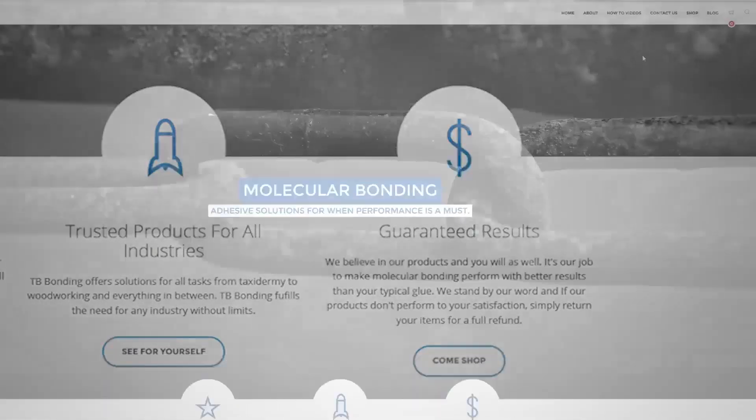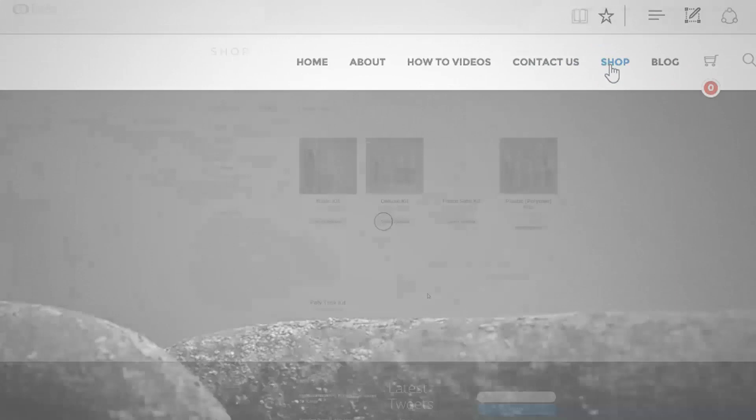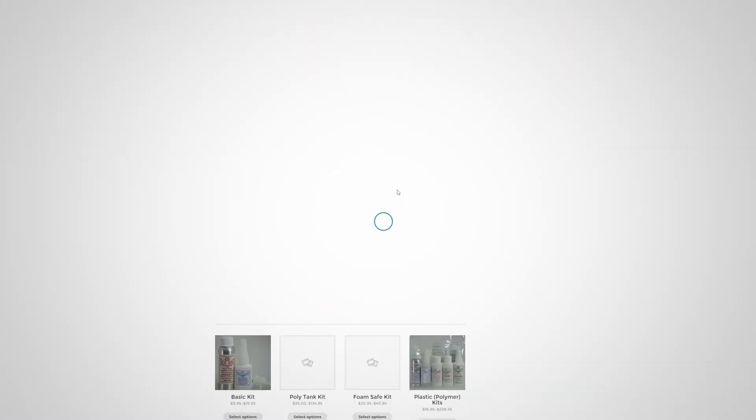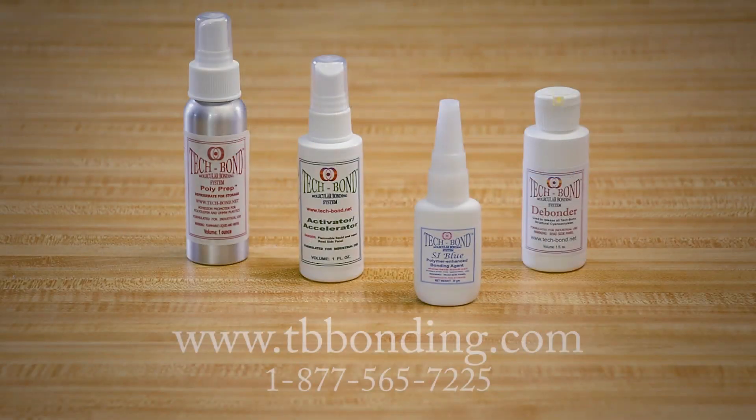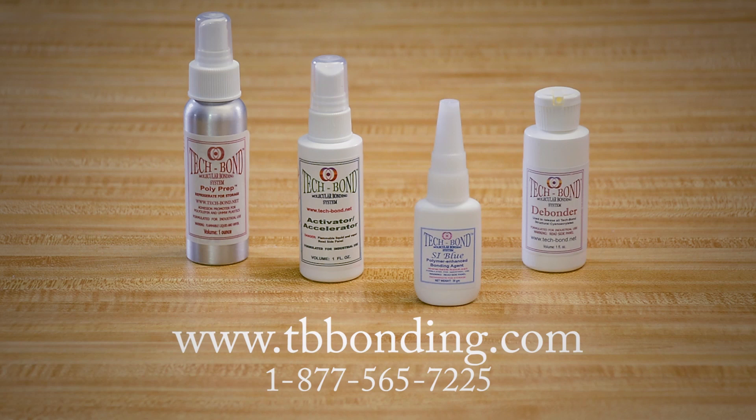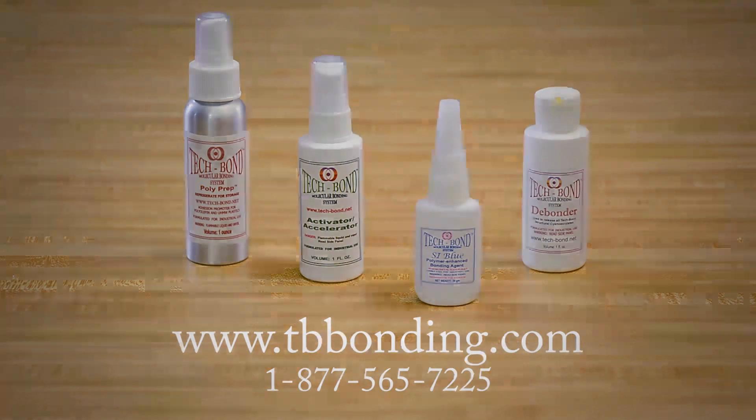You can purchase any of our items individually or, to save money, you can choose one of our kits. Kits will save you 15% over the individual pricing. Just visit the shopping cart at www.tbbonding.com or give us a call at 1-877-565-7225. Happy Repairing!